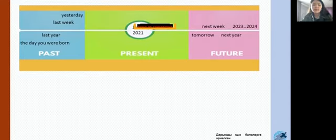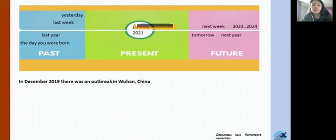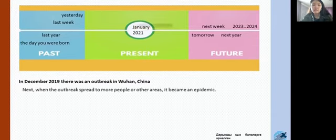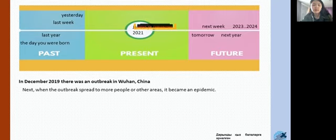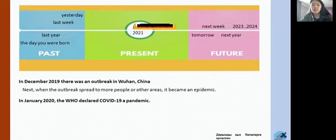Let's revise how it all started. Firstly, in December 2019, there was an outbreak in Wuhan, as you remember. Next, when it spread to more people and other areas, it became an epidemic. And in the end, in January 2020, the World Health Organization declared COVID-19 as a pandemic.